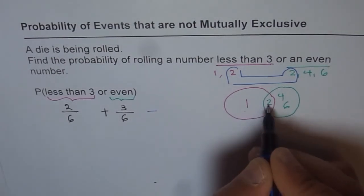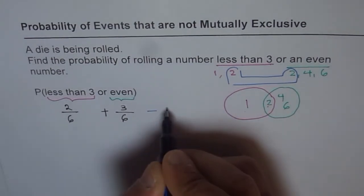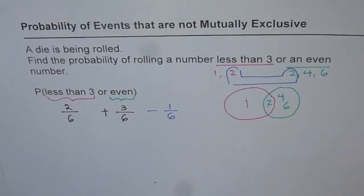So what is the probability of getting 2? Is 1 out of 6. So we have to subtract that to get the real answer.